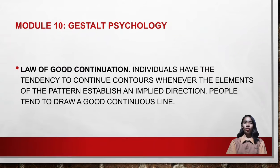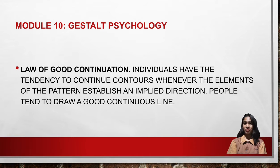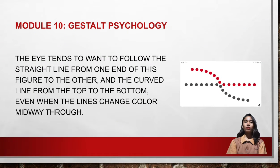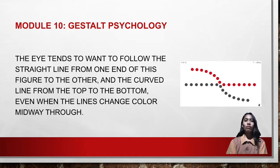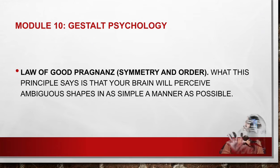The fourth law is the law of good continuation. Individuals have the tendency to continue contours whenever the elements of a pattern establish an implied direction. People tend to draw a good continuous line. The eye tends to follow the straight line from one end of a figure to the other, and the curved line from top to bottom, even when the lines change color midway through.